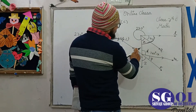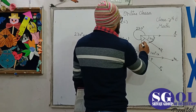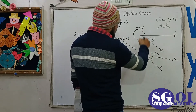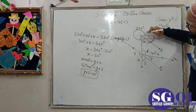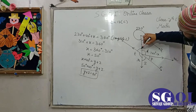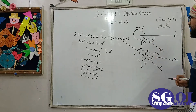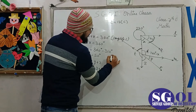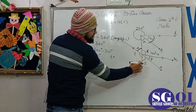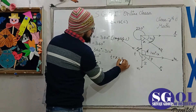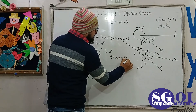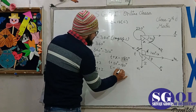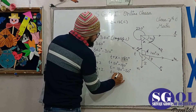Looking at lines Q and P with line R acting as a transversal, the alternate angles are equal. Therefore T + X = 180 degrees. Substituting X = 50 degrees: T + 50 = 180, so T = 180 - 50 = 130 degrees.